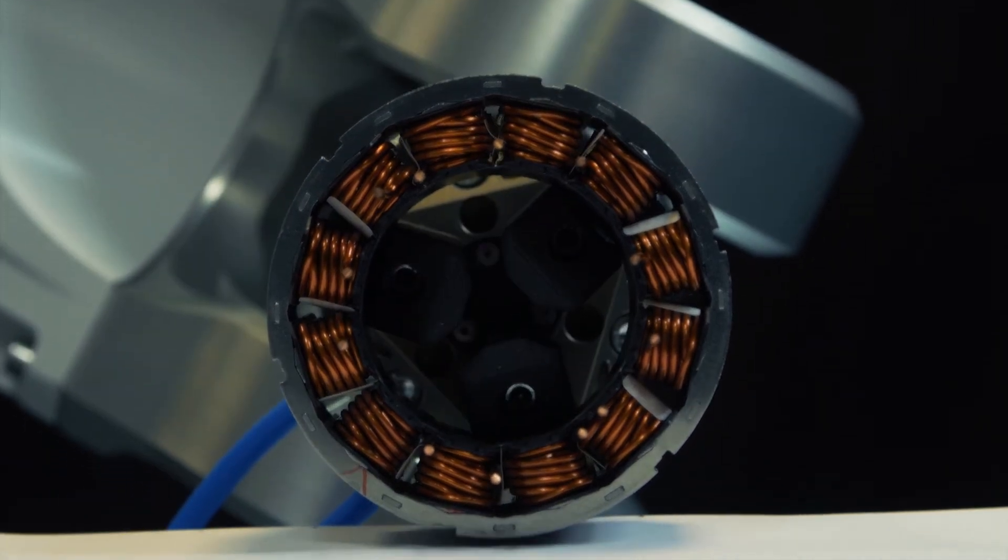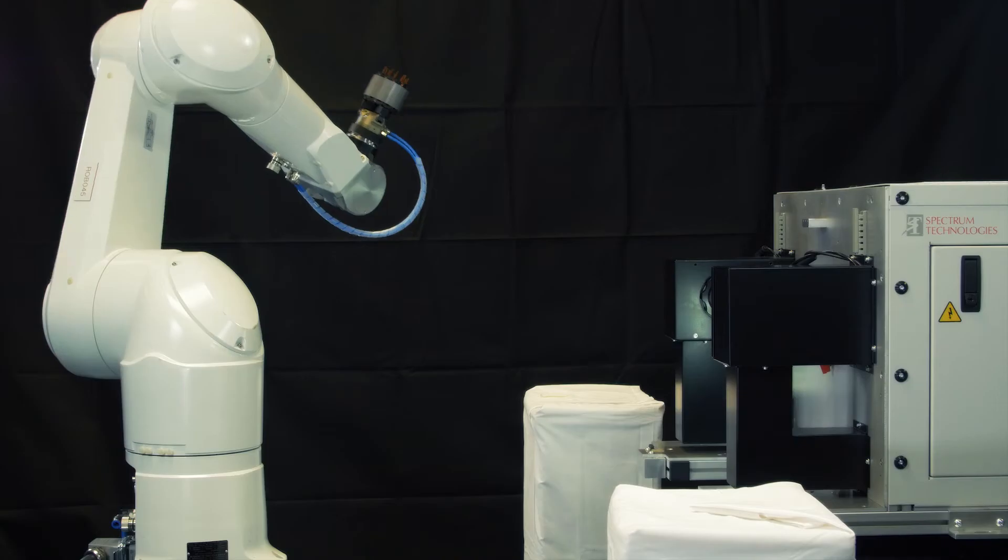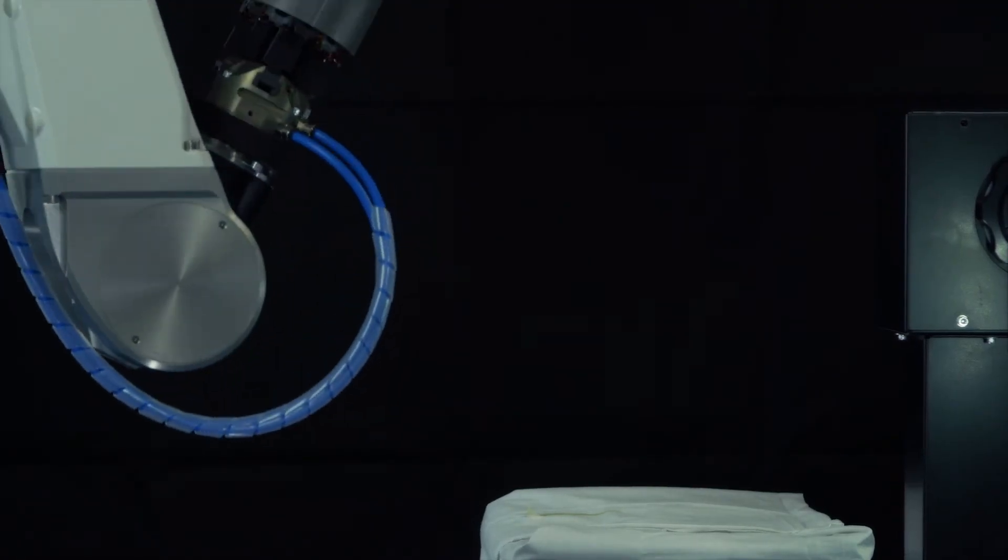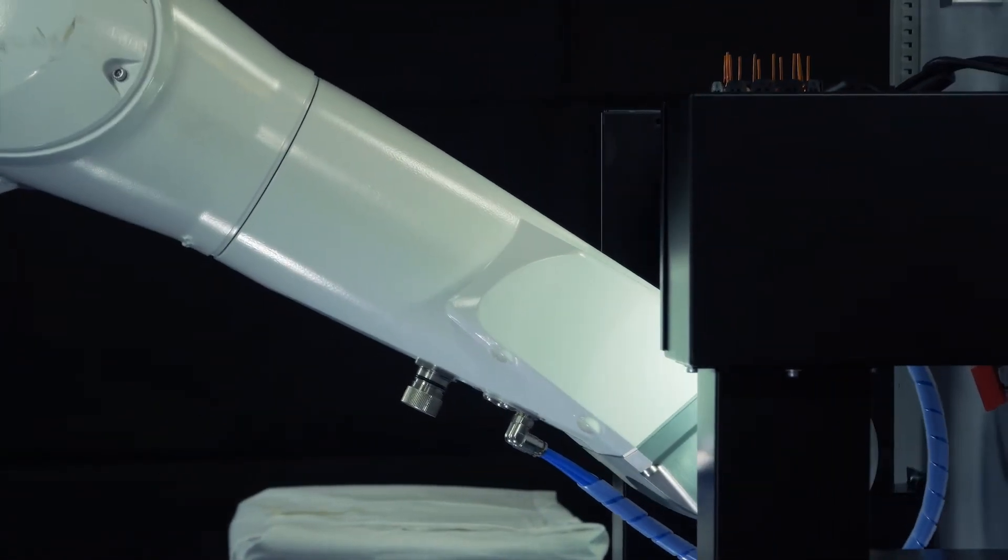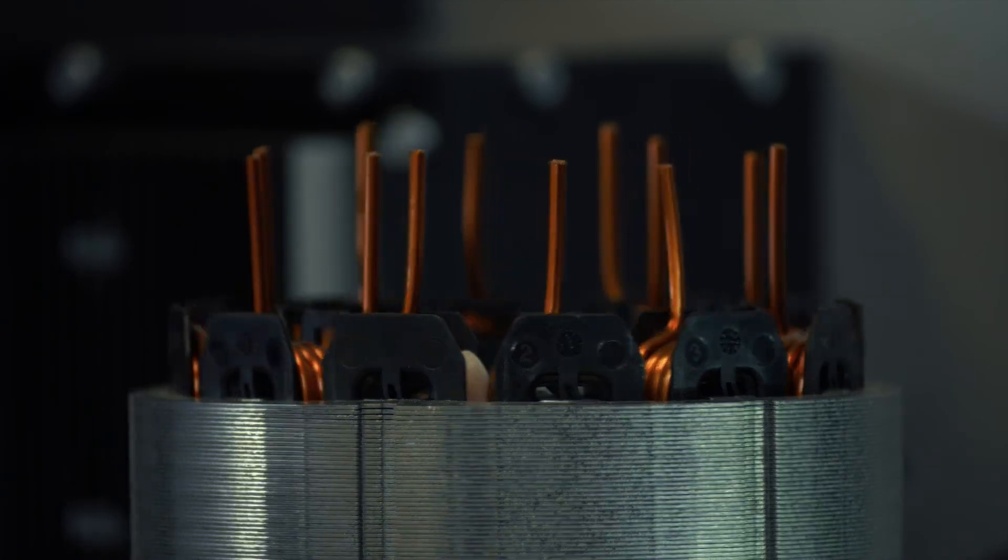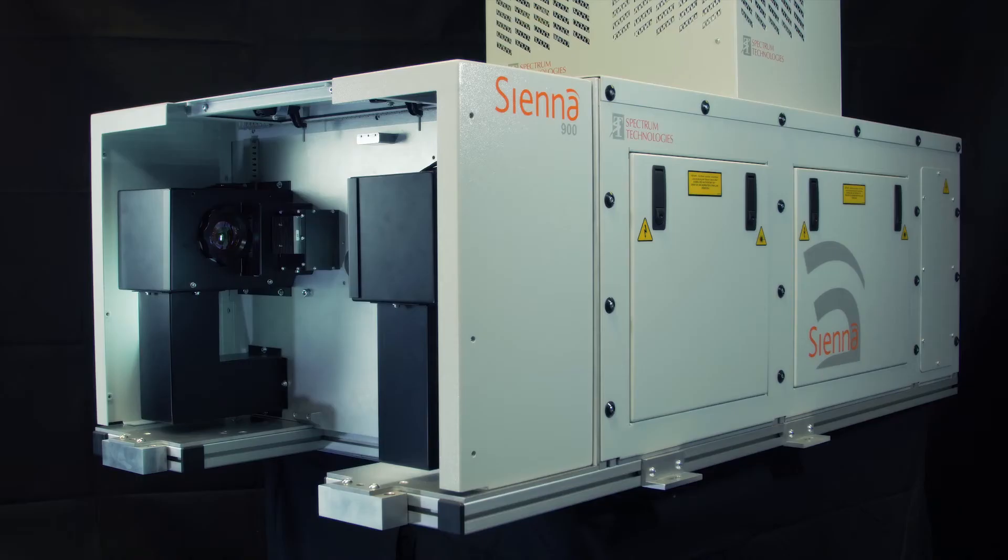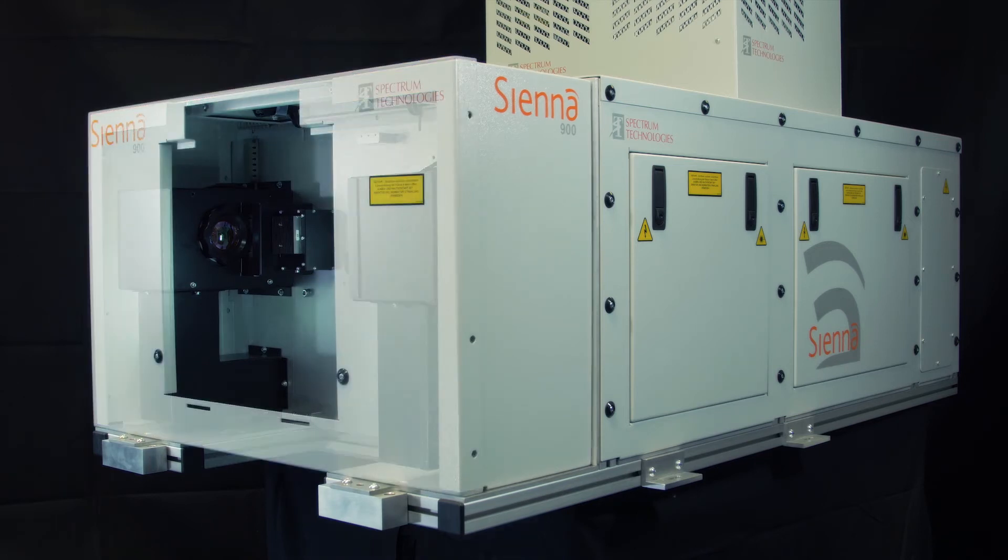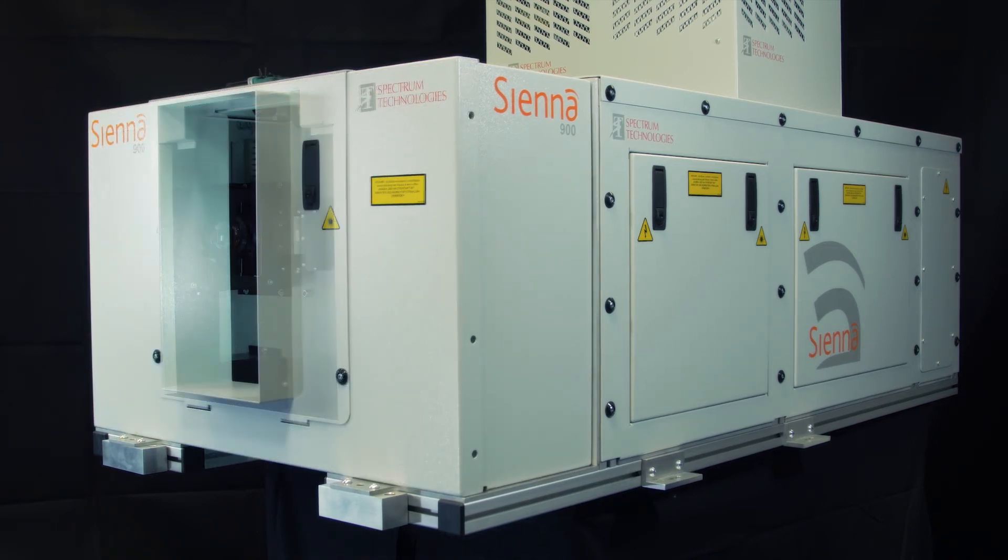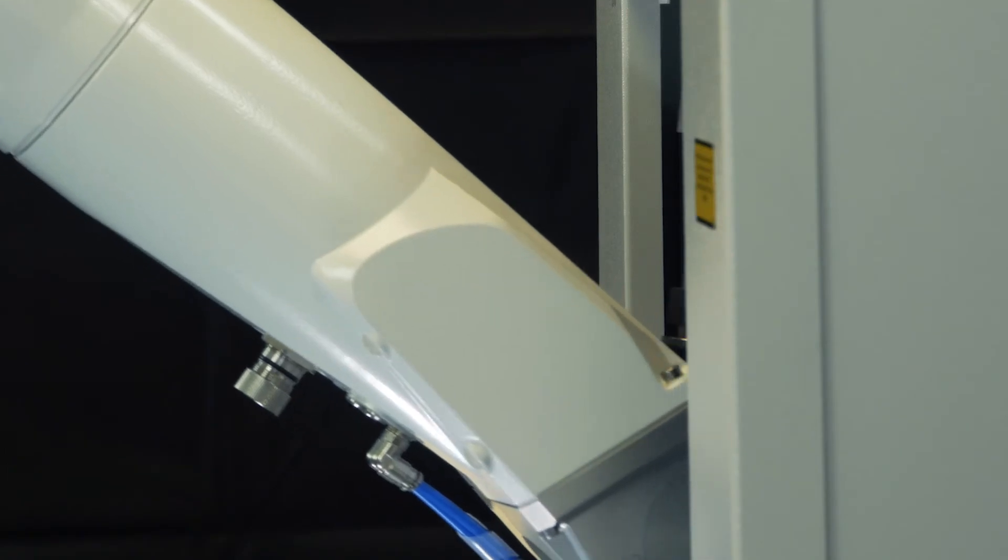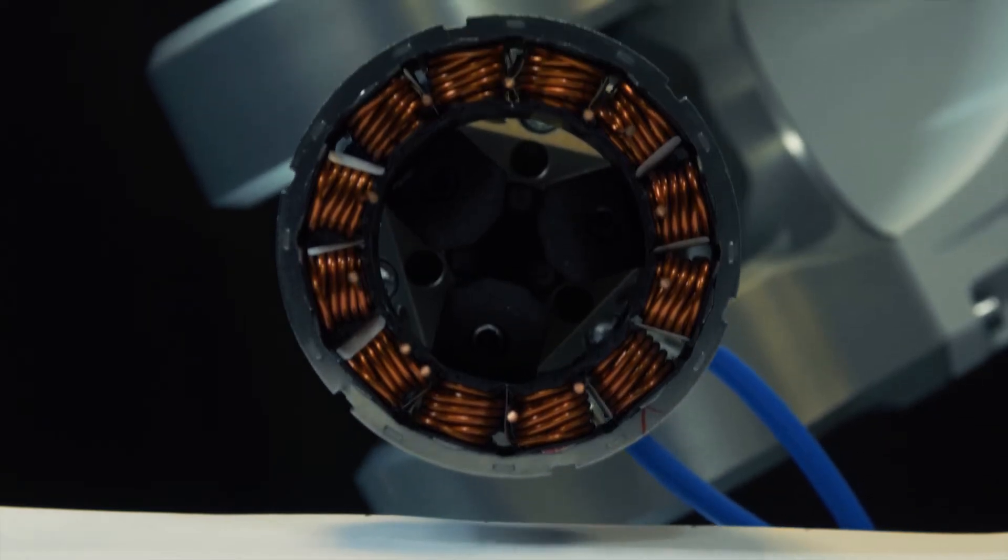The large processing envelope provides the flexibility for integration with a range of materials handling systems, comfortably connecting the Sienna 900's speed, quality and precision with your production setup. Offering a fully customizable front enclosure for safe laser operation, the system can be configured to suit your manufacturing requirements.